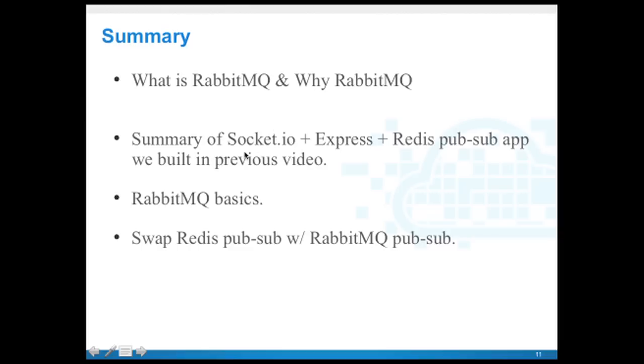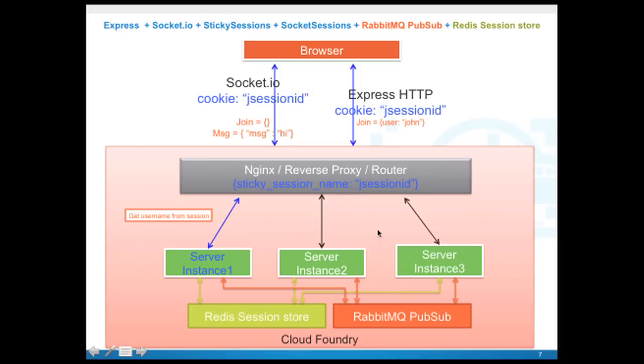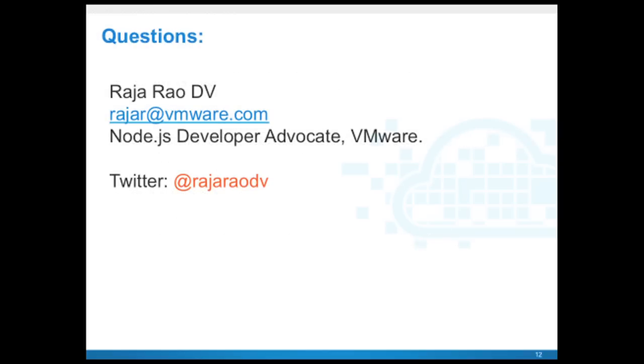Just to summarize what we did today: we started off with learning what RabbitMQ is and why we should even care about it. Then we went over a previous chat application that was using Socket.io, Express, and Redis pub-sub. I also talked about RabbitMQ basics, especially from node.js perspective. And finally we swapped Redis pub-sub with RabbitMQ pub-sub like this one.